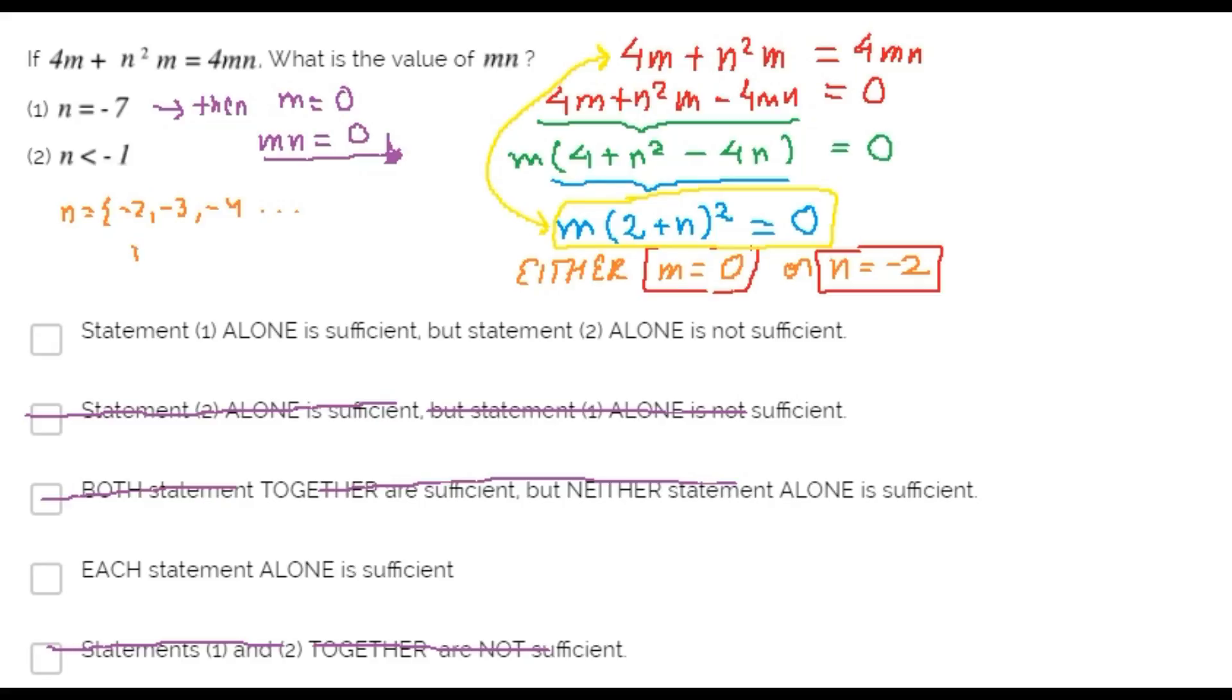If n is negative 3, then m must be zero and their product should be zero, too. But we don't know what is the value of m.